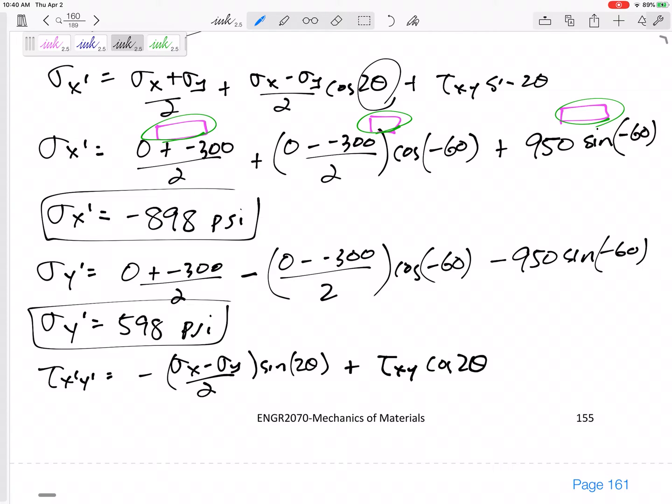My class doesn't have to memorize that. That's on our equation sheet, our formula sheet. So you just have to plug in. What is sigma x? 0 minus negative 300 over 2 times sine of 2 times negative 30, right? The sine of negative 60 plus 950 cosine of 2 times negative 30. And this would get a tau, my new shear stress, 605 psi.